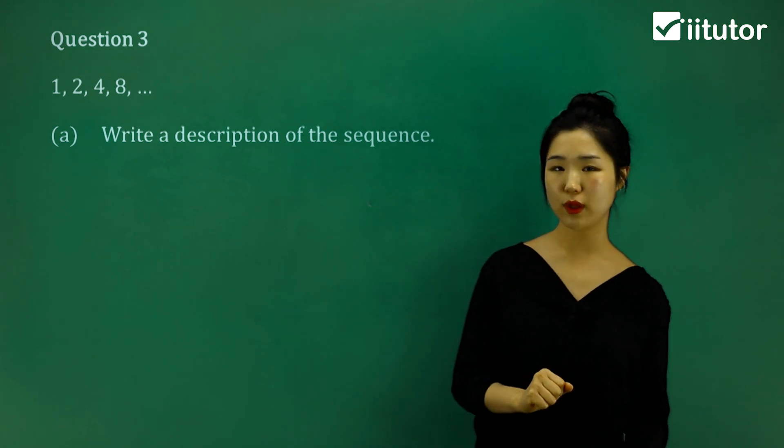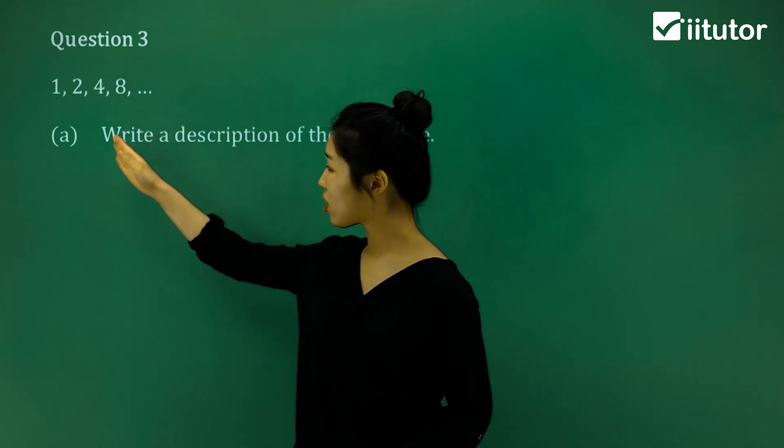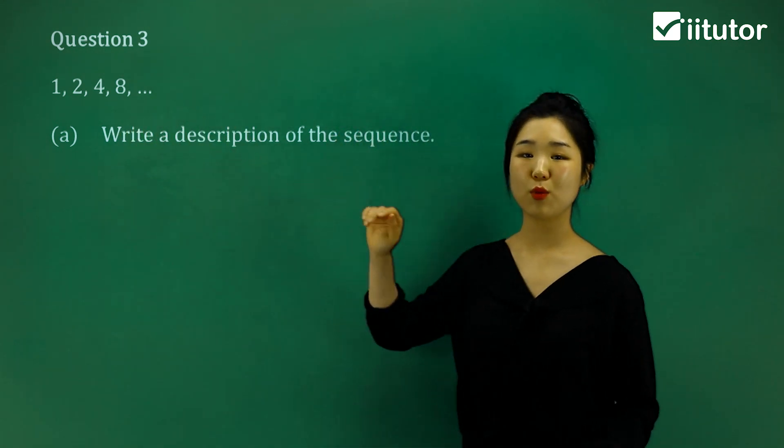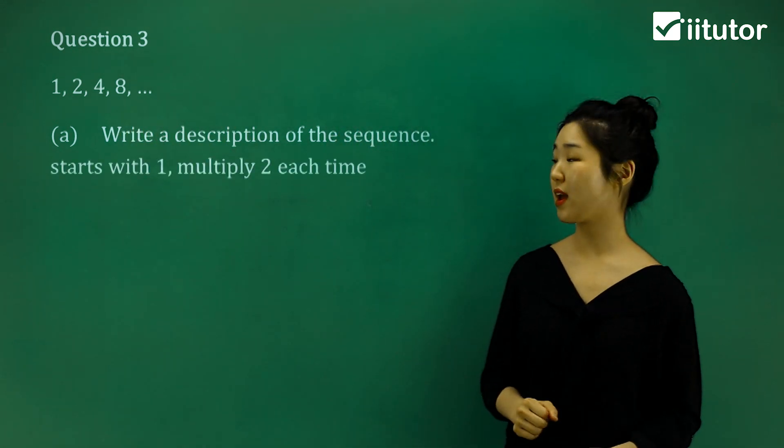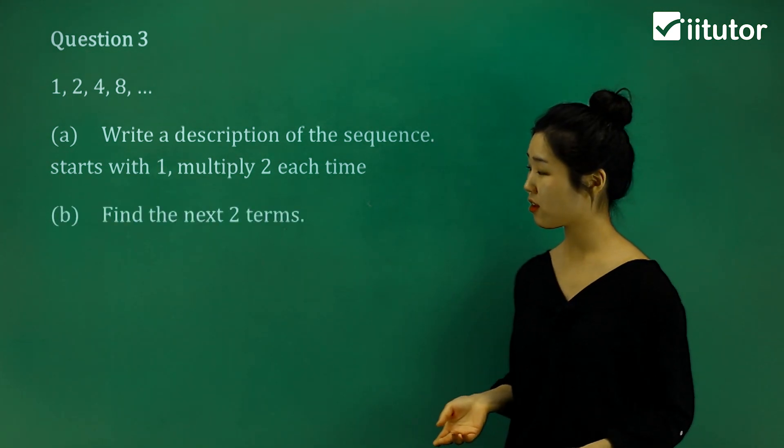This time, try multiplying. When the difference is not the same, try multiplying. I know that 1 times 2 is 2. 2 times 2 is 4. 4 times 2 is 8. So it must be multiplying by 2. So this one starts with 1 and multiplies by 2 each time.